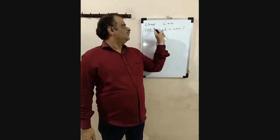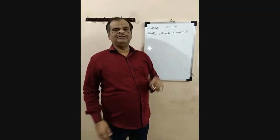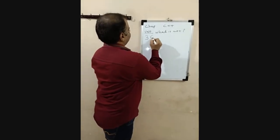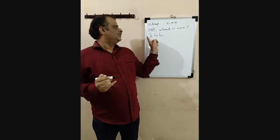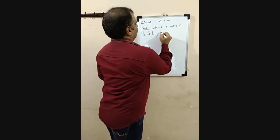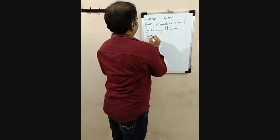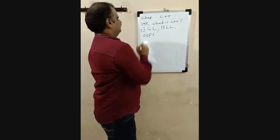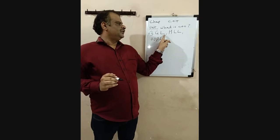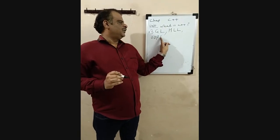Today we discuss C++ and what C++ is. C++ is a third generation language, also called a high-level language, and it is called an object-oriented programming language.